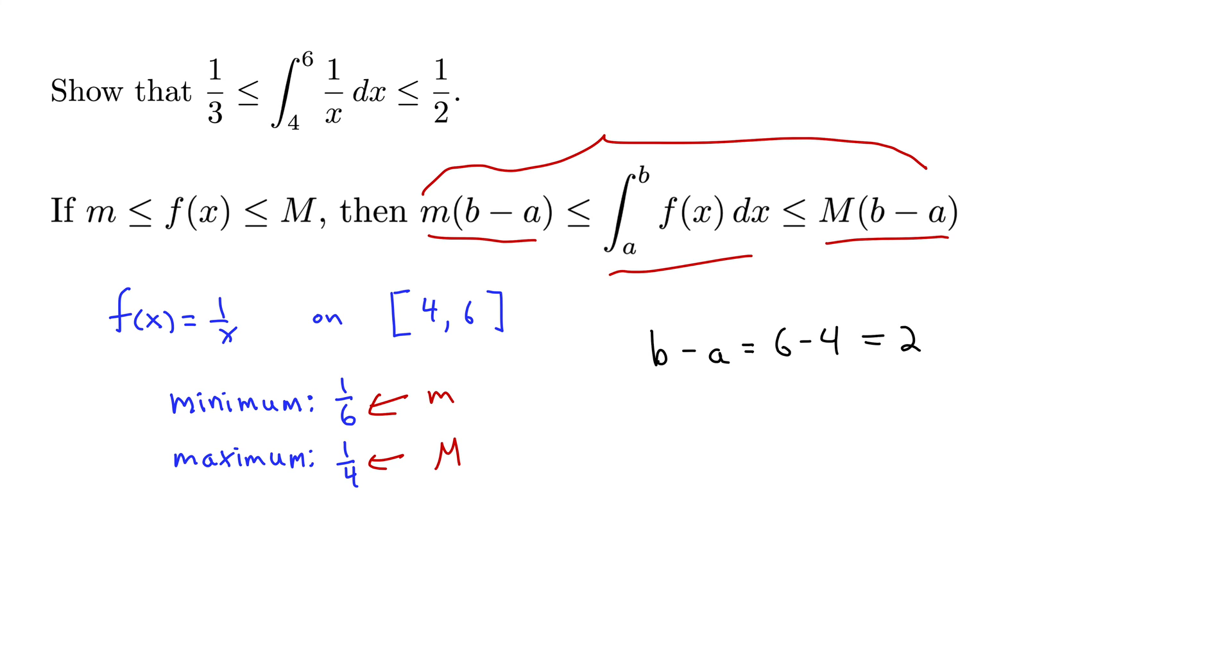And then putting it all together and using this property here, we have: little m, 1/6 times 2 is less than or equal to this integral from 4 to 6 of 1/x dx, less than or equal to big M, which was 1/4, again times b minus a, which is 2.